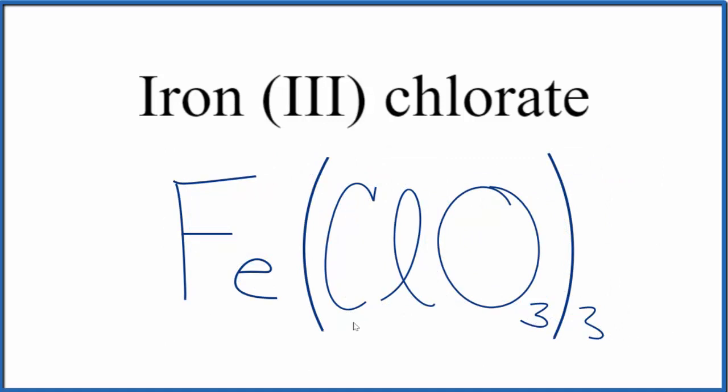If you were given this formula and asked to write the name for Fe(ClO3)3, you know that you have three chlorate ions. Each one is 1-, so this is going to have to be a 3+. So you'd write iron (III) chlorate.